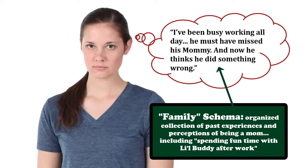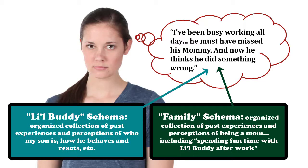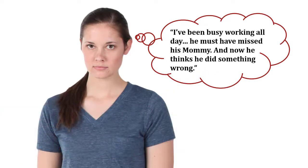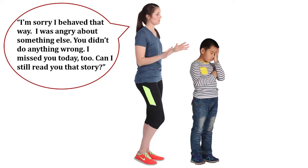She thinks: I've been busy working all day, he must have missed his mommy, and now he thinks he did something wrong. When mom is able to look at the perception process from the standpoint of the little buddy and the way he makes sense of the world, she's in a better position to draw a conclusion that makes better sense: I shouldn't treat him like a coworker making a demand — he's my son, and when he wants to read with me, it's because he wants to be with me, and I really enjoy that. Taking this alternative standpoint enables her to move from the workplace chaos schema to the mother-son family time after work schema. And so we have the possibility for a redirect: 'I'm sorry I behaved that way. I was angry about something else. You didn't do anything wrong. I missed you today too. Can I still read you that story?' — 'Yay, mommy!' — and all's well that ends well.